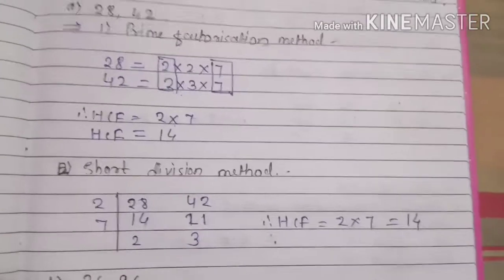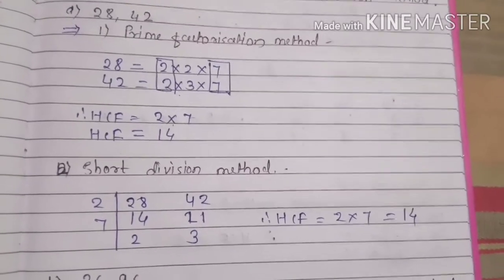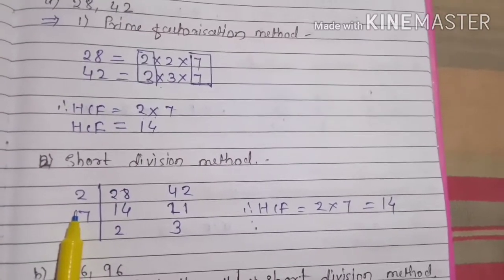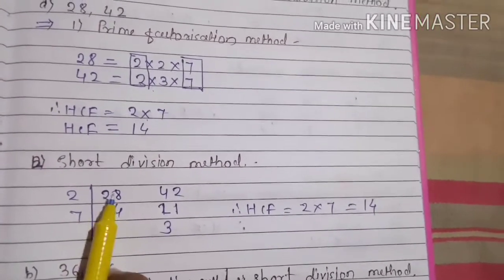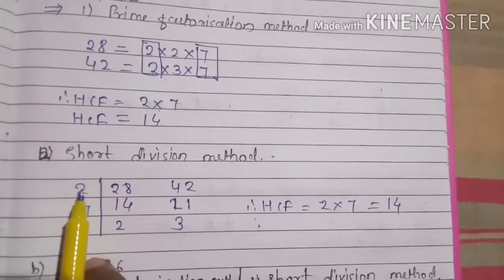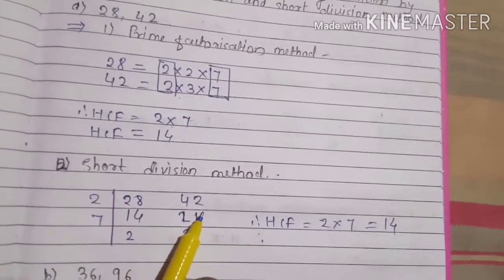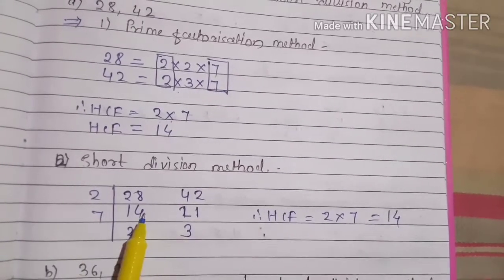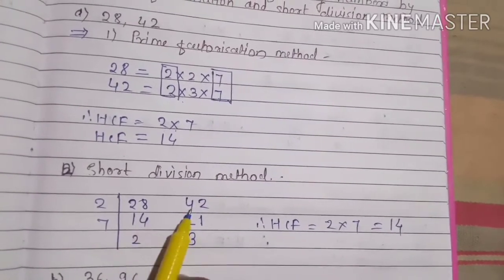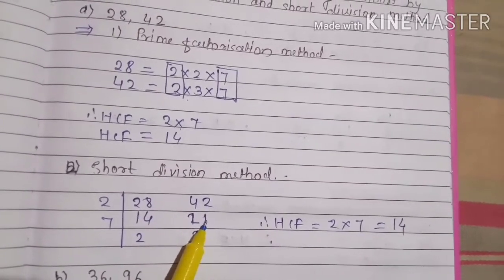Next is the short division method. In the short division method, find the HCF by doing division. Write down 28 and 42 side by side and divide by the smallest prime number that divides both. Divide by 2: you get 14 and 21. Then divide by 7: 7 twos are 14 and 7 threes are 21. Two and three are not divisible by any common number — these are co-prime numbers.